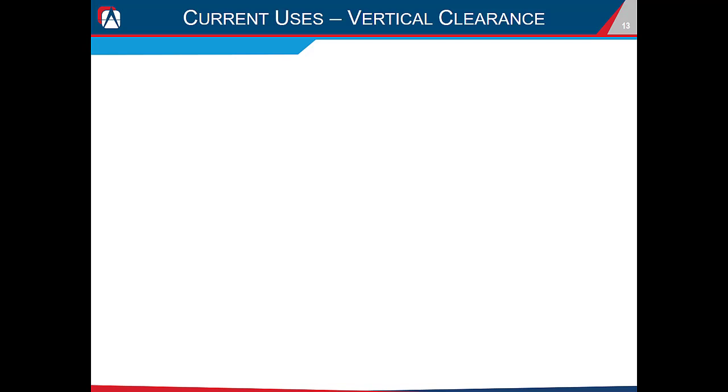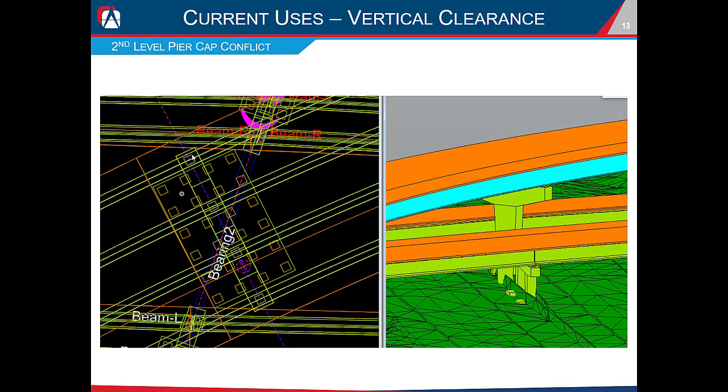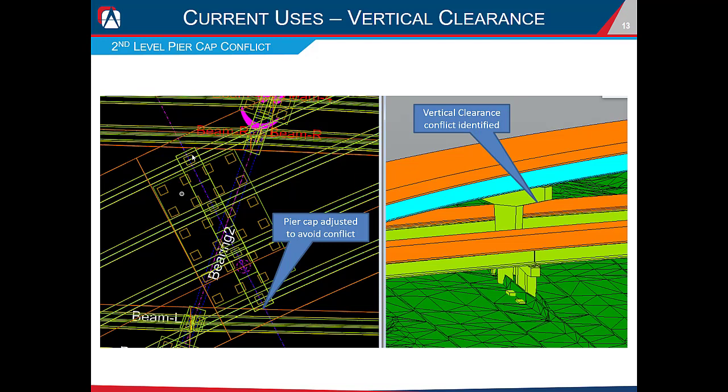OBM is also useful for checking vertical clearance against other structures. The roadway group typically looks only at the superstructure depth, but by modeling the bridge in OBM we identified a vertical clearance issue between the pier cap of a second-level bridge and the first-level bridge deck below. We were able to adjust the pier cap lengths accordingly and eliminate the conflict early in the design process.